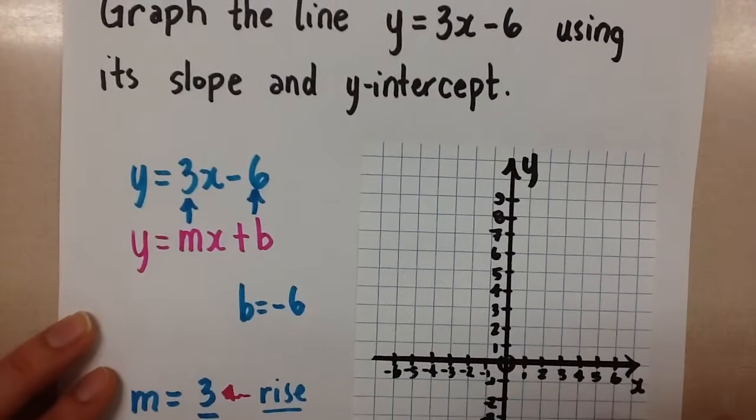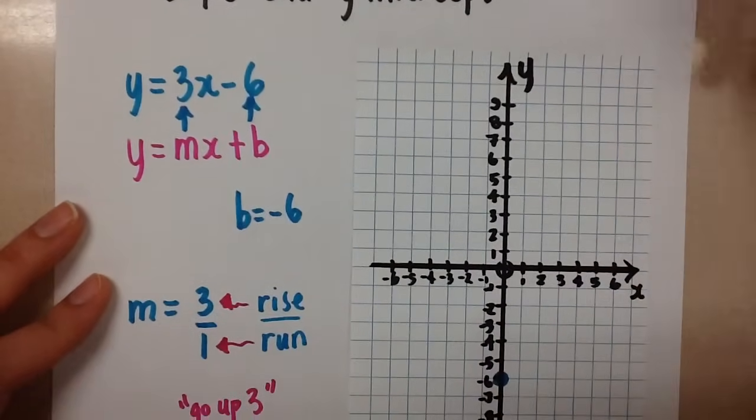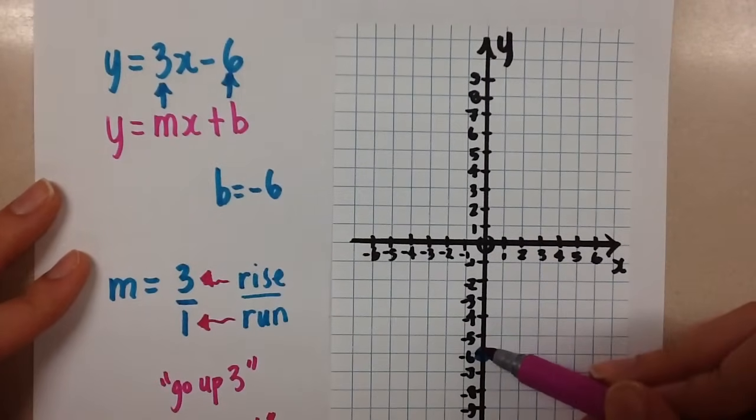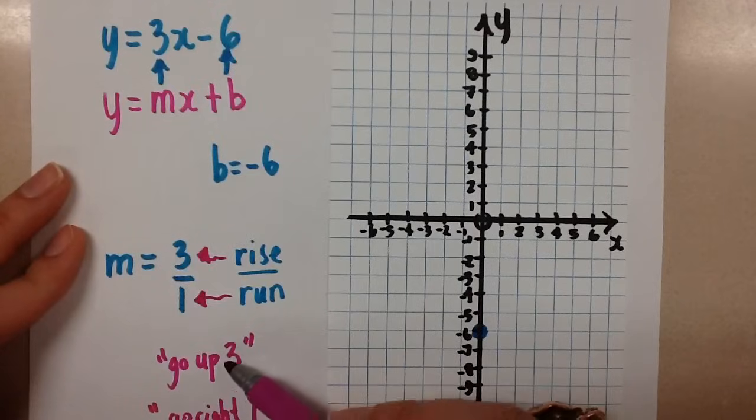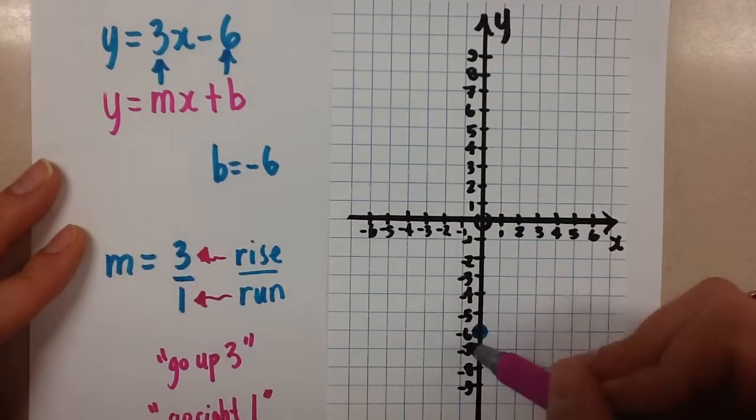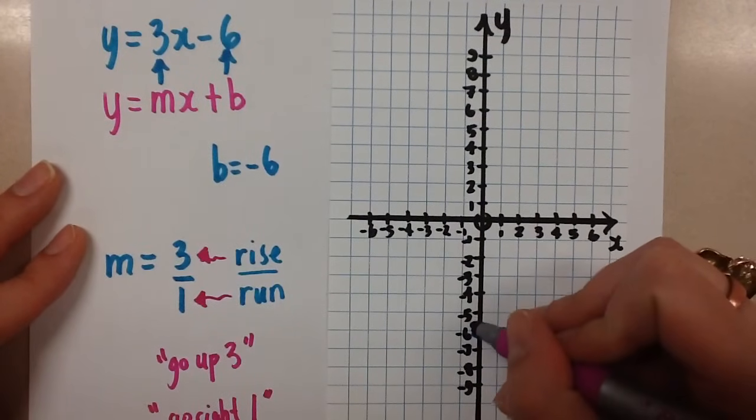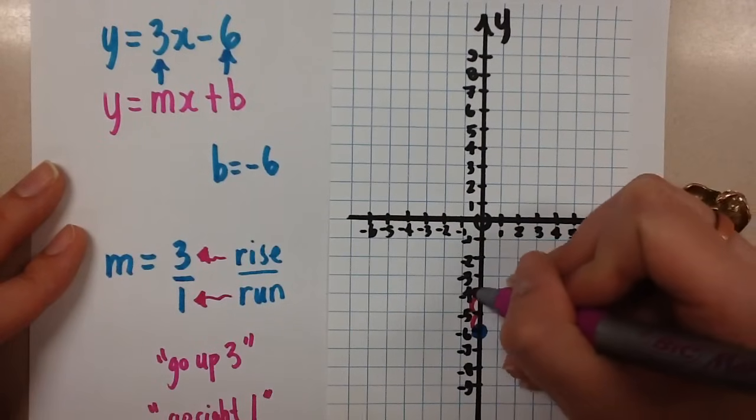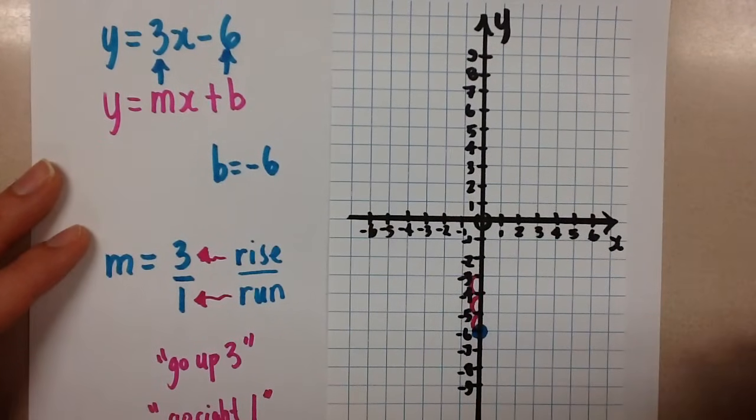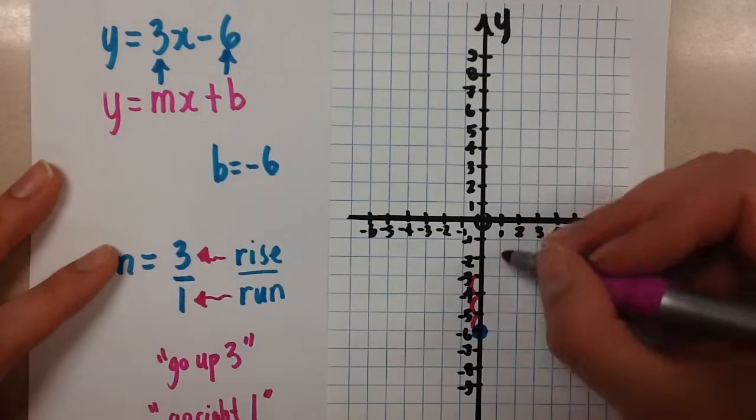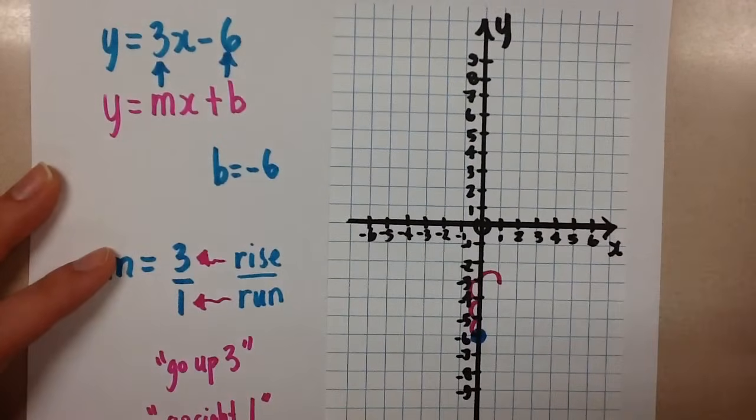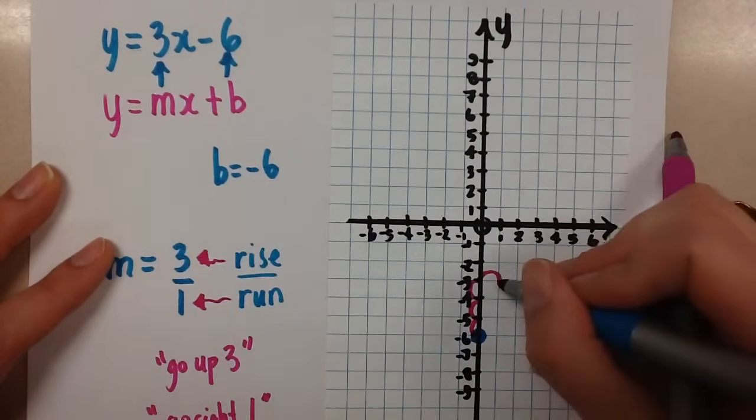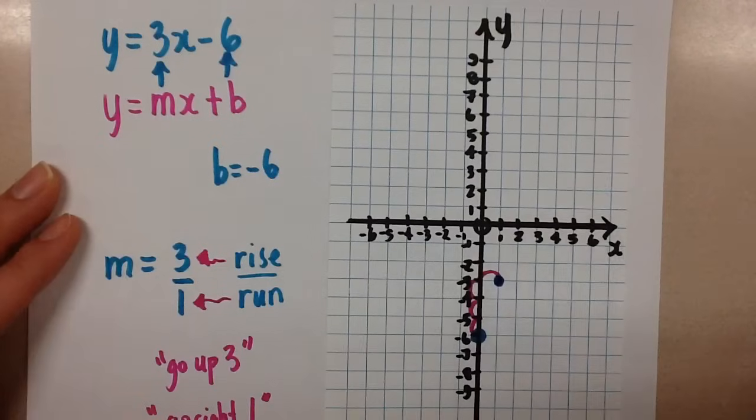So we're going to go over to the y-intercept that we started on the graph here, and we're going to do exactly what the rise tells us. Go up 3 because it was positive 3. So from here, I'm going to count 1, 2, 3 up. And then I'm going to do what the run says, which is go right 1. Right there is my new point for this line.